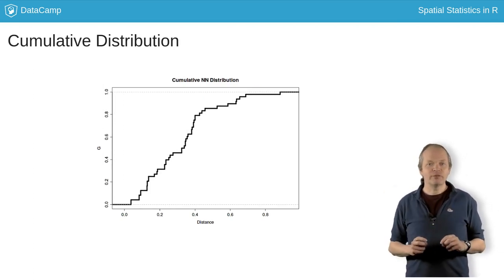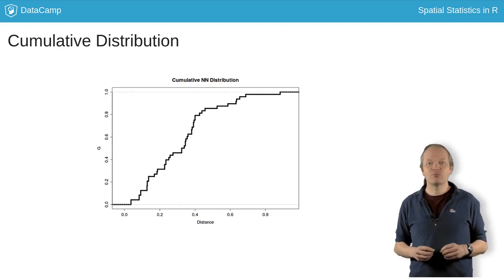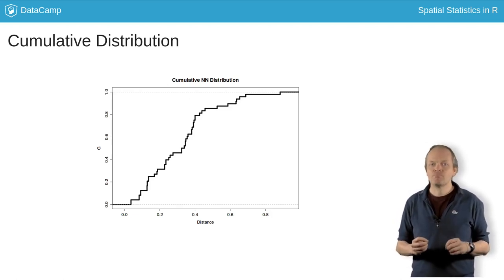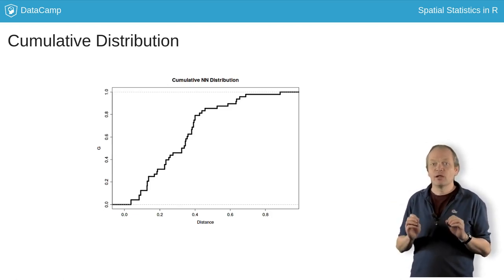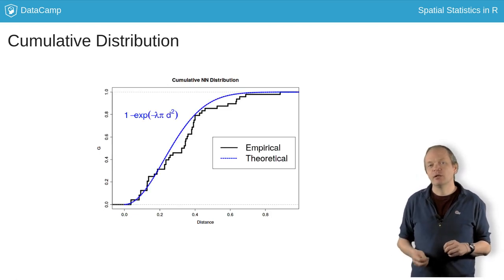For a completely spatially random process, the theoretical form of G can be worked out exactly. So, for a process with lambda events per unit area, it looks like this.